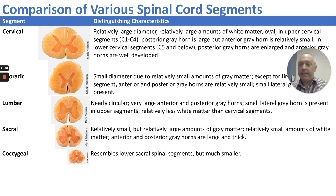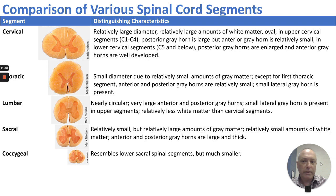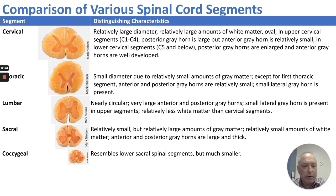If we compare spinal cord segments side by side, they differ in size and geometry. The cervical cord segments are relatively large with a large amount of white matter, and the anterior horn is slightly bigger than the posterior horn. In the thoracic region, the cord is a little smaller in diameter. The lumbar segment is nearly circular with very large anterior and posterior gray horns. The sacral segment is slightly smaller but still has relatively large amounts of gray matter compared to cervical. The coccygeal segment resembles the sacral but is a little smaller.